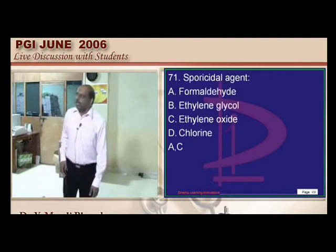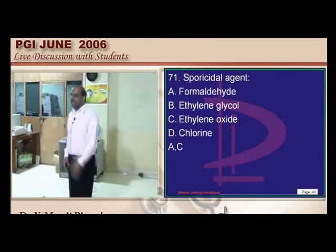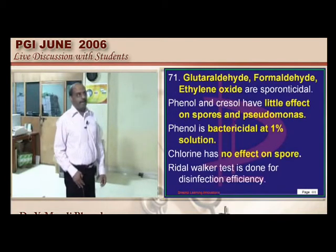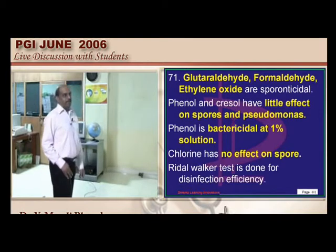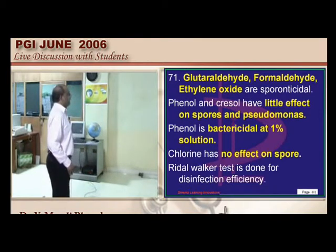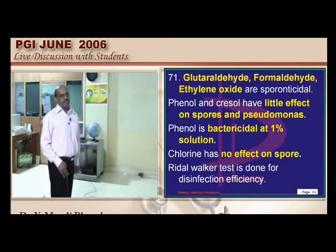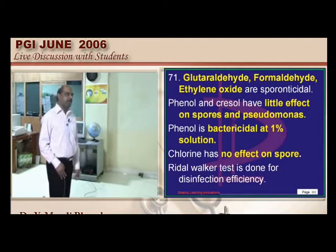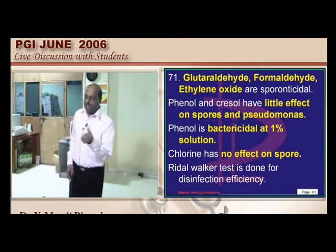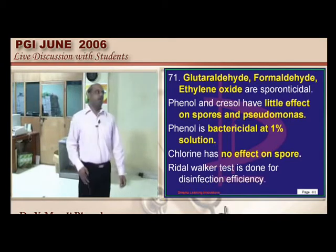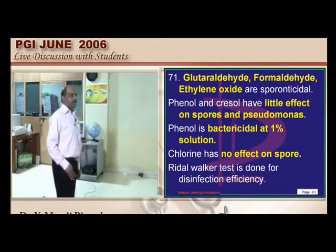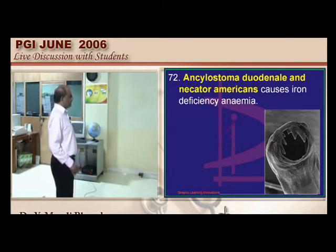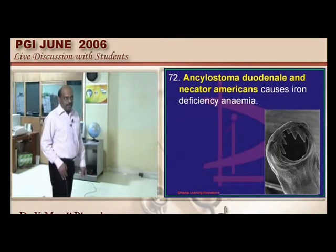Disinfectants and sterilizing agents: glutaraldehyde, formaldehyde, and ethylene oxide are sporicidal. Phenol and cresol have very little effect on spores. Pseudomonas — phenol is bactericidal. Chlorine has no effect on spores at all. The Rideal-Walker coefficient is commonly used to assess the efficacy of a disinfectant.